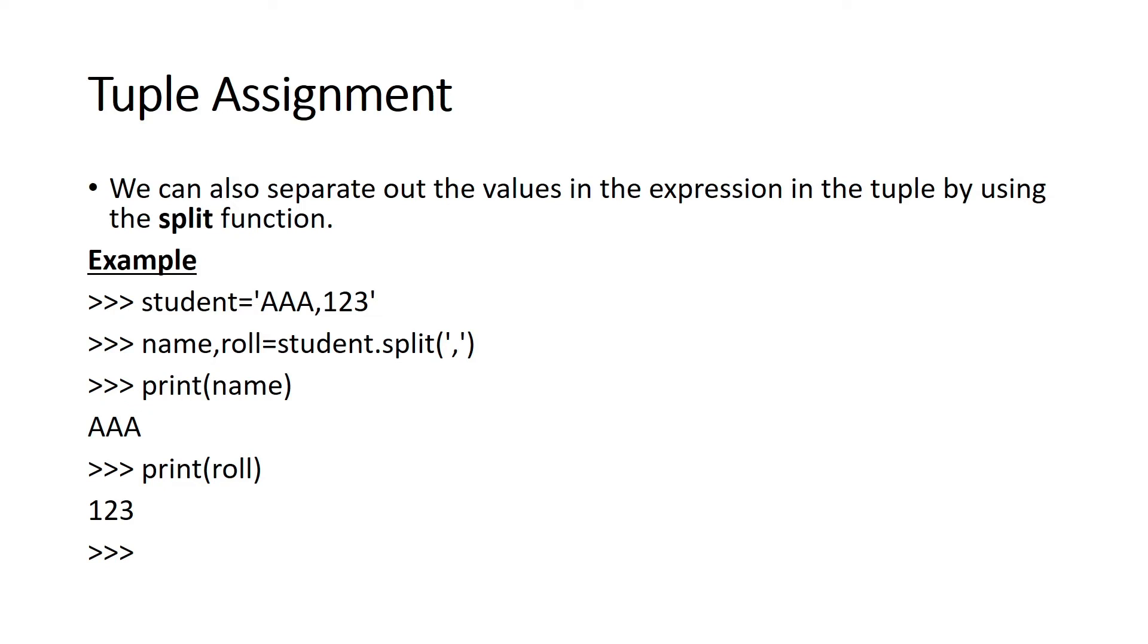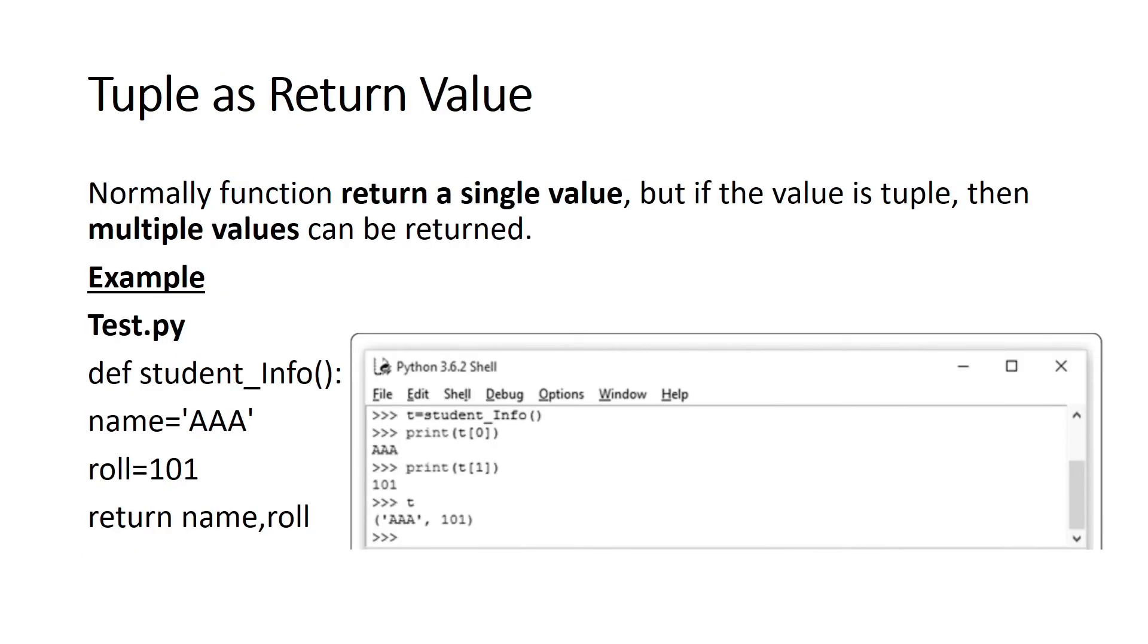Next is tuple as return value. Normally functions return a single value, but if the value is a tuple, then multiple values can be returned. For example, in test.py file, def student_info - this is the function name. Inside the function definition, name gets a value and role number gets a value, and then name and role are returned.